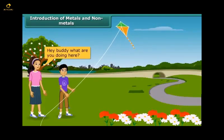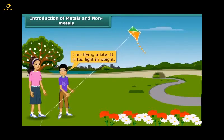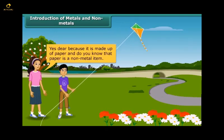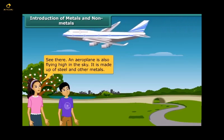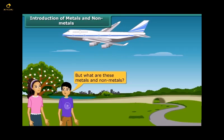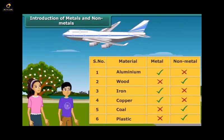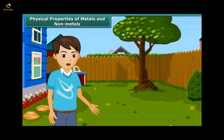Hey buddy, what are you doing here? I am flying a kite — it is too light in weight. Yes, because it is made up of paper, and paper is a non-metal item. See there — an airplane is also flying high in the sky. It is made up of steel and other metals. But what are these metals and non-metals? Friends, we use many things in our daily lives; these are made up of metals and non-metals.